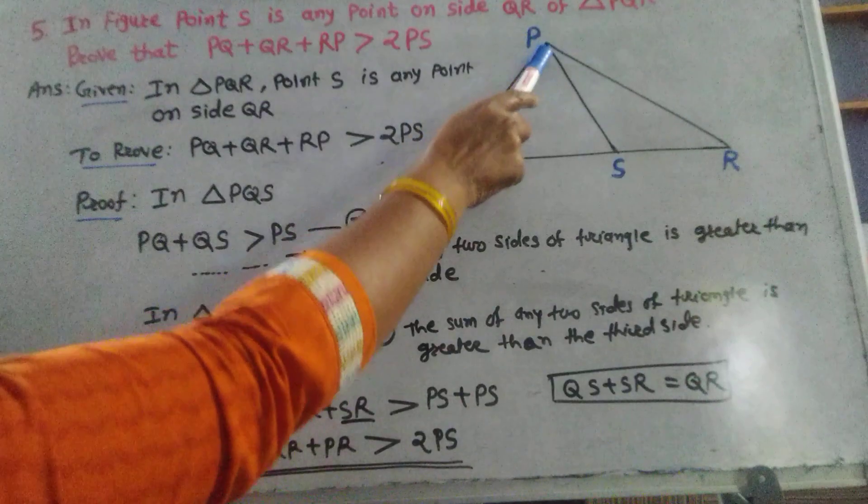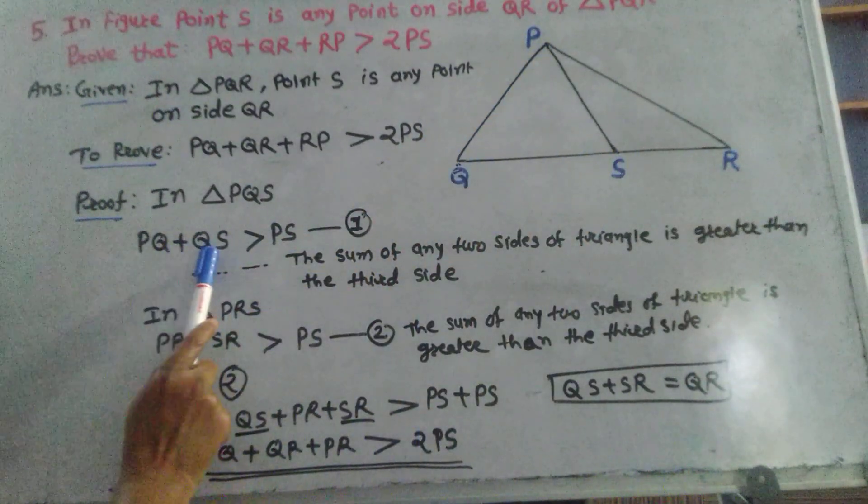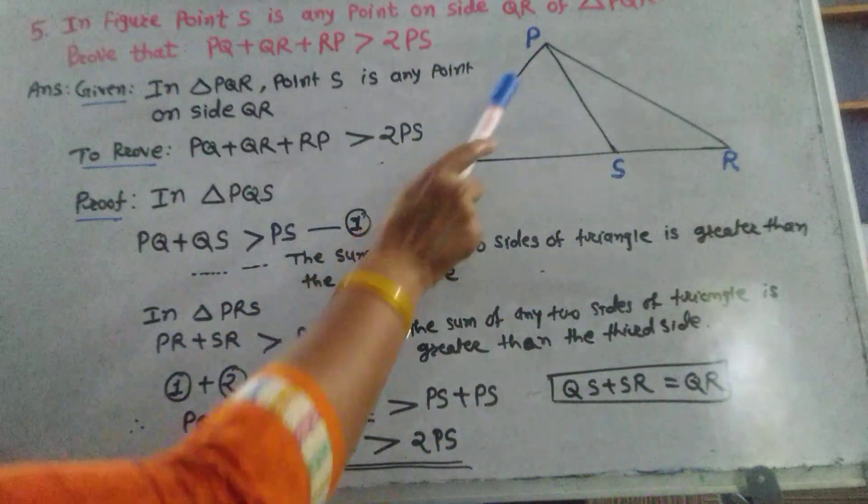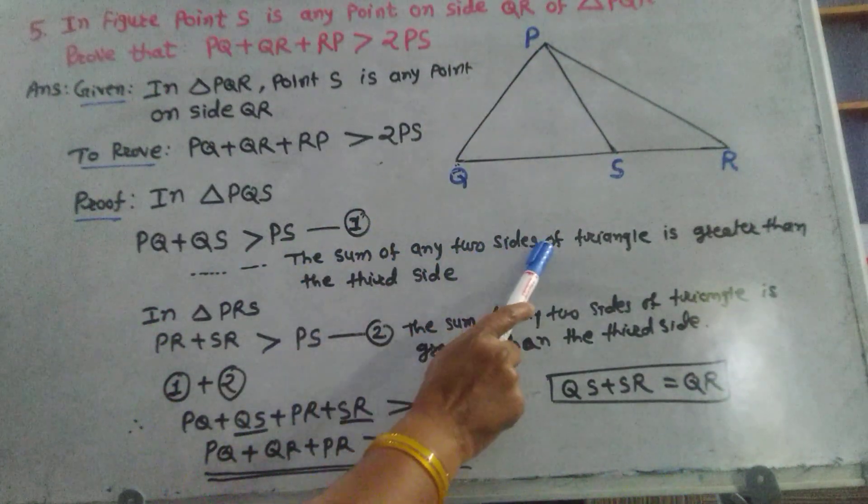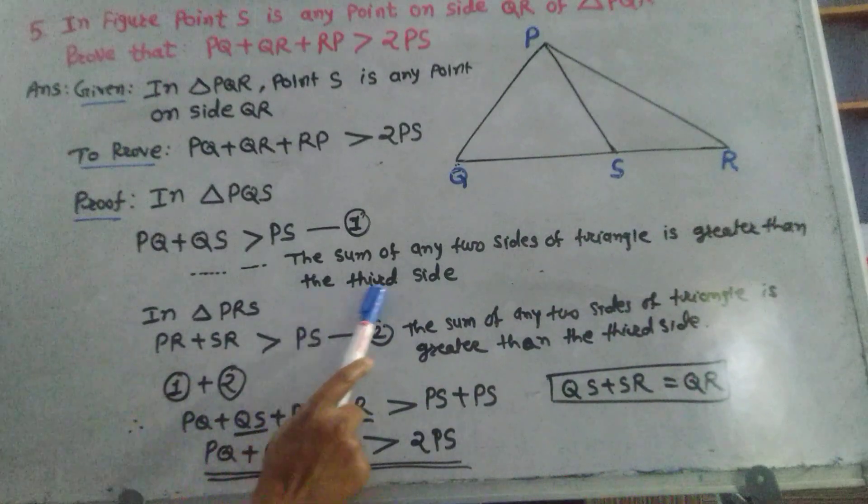Proof. In triangle PQS, PQ plus QS is greater than PS, equation 1. Reason: The sum of any two sides of a triangle is greater than the third side.